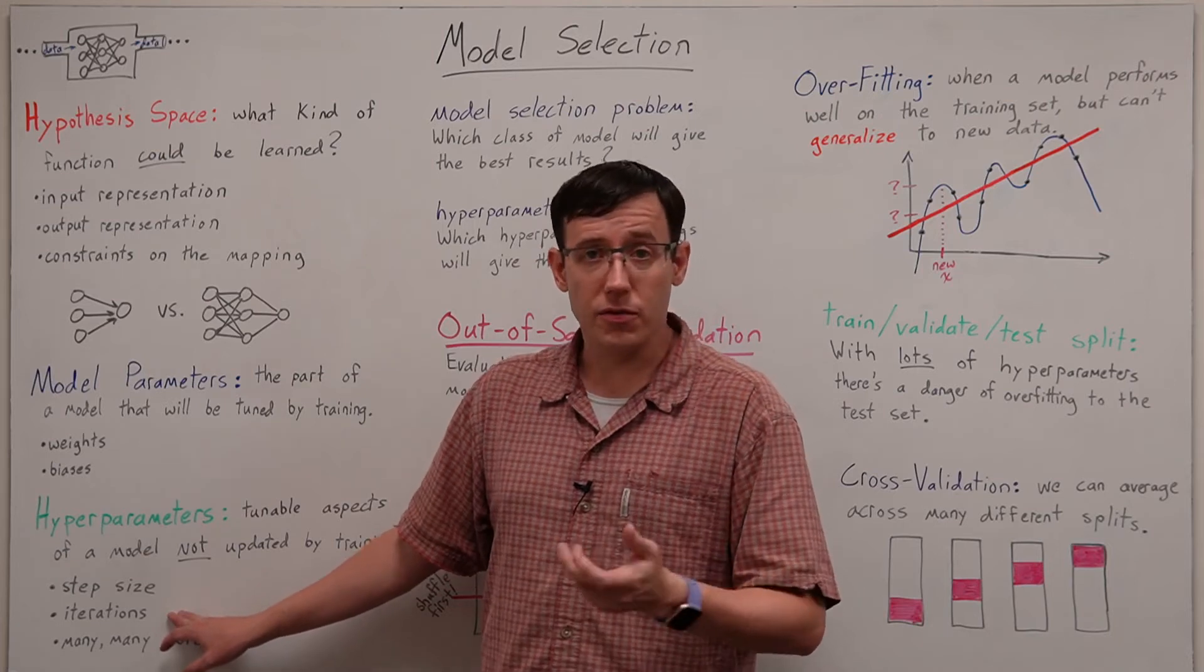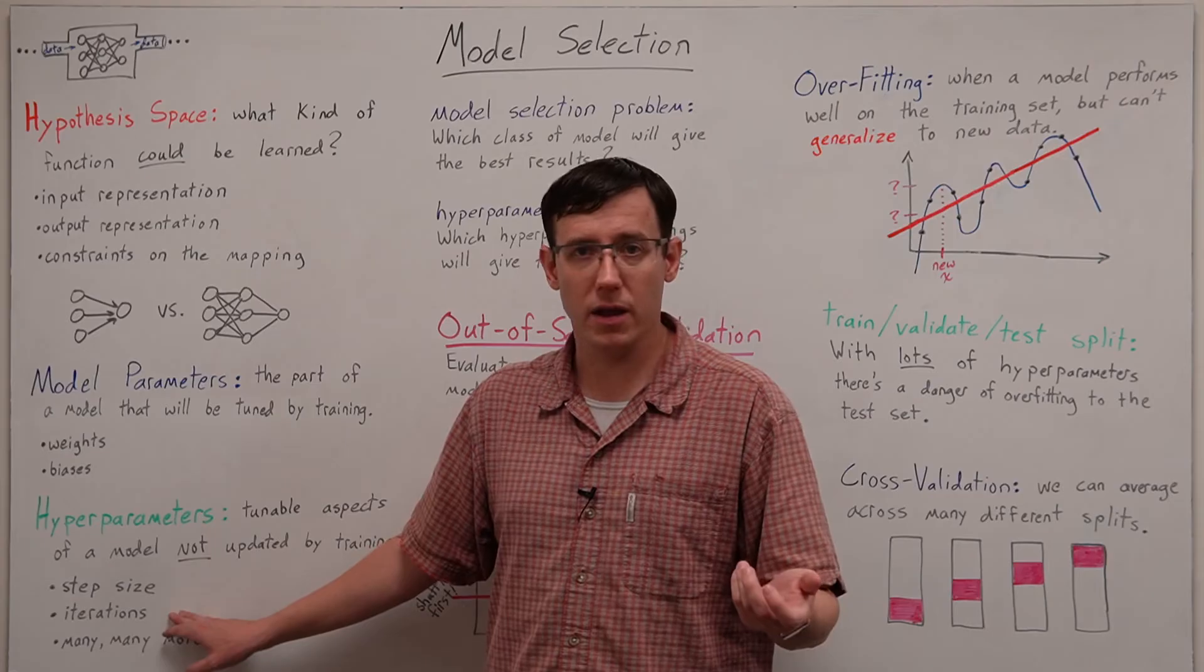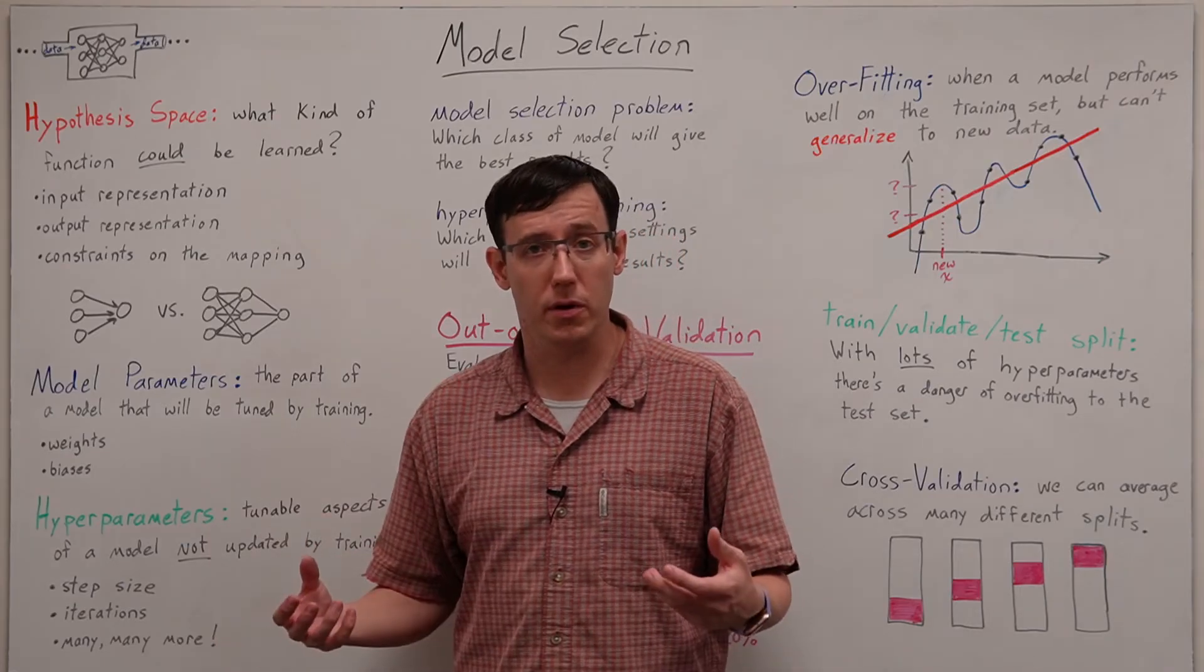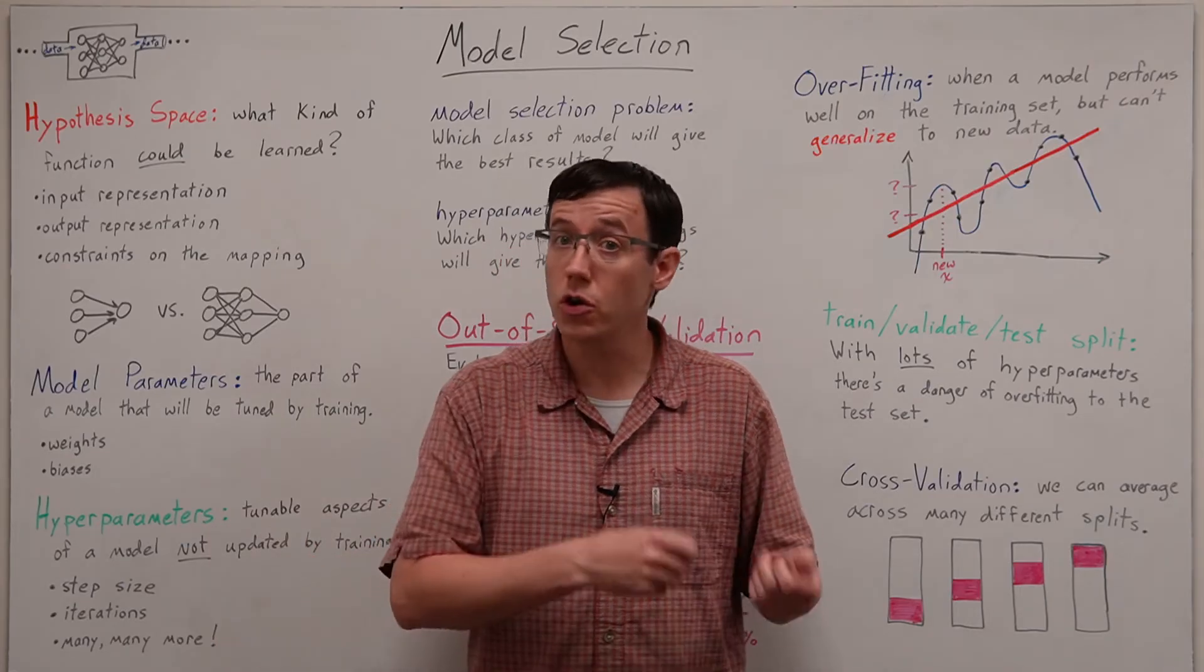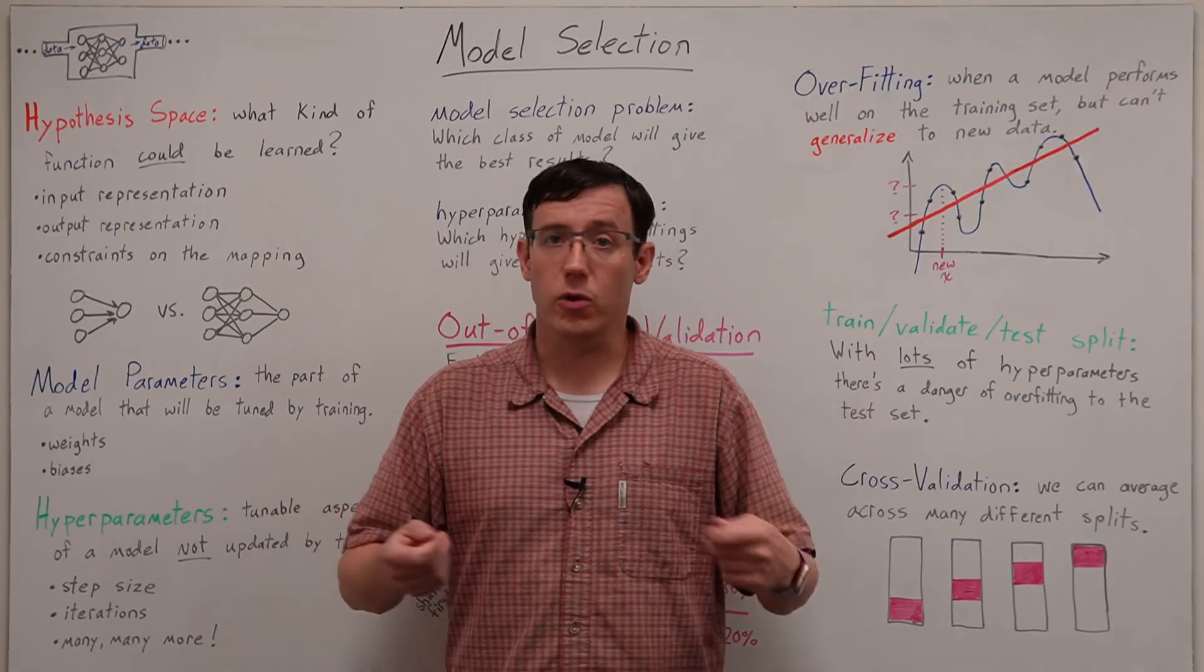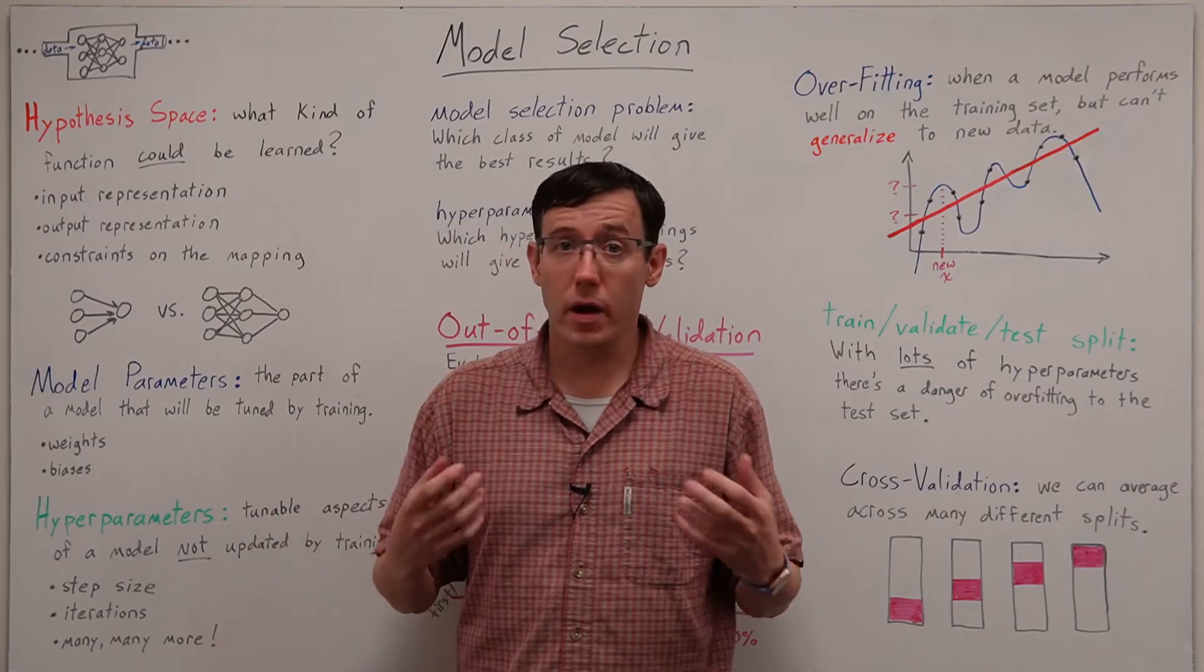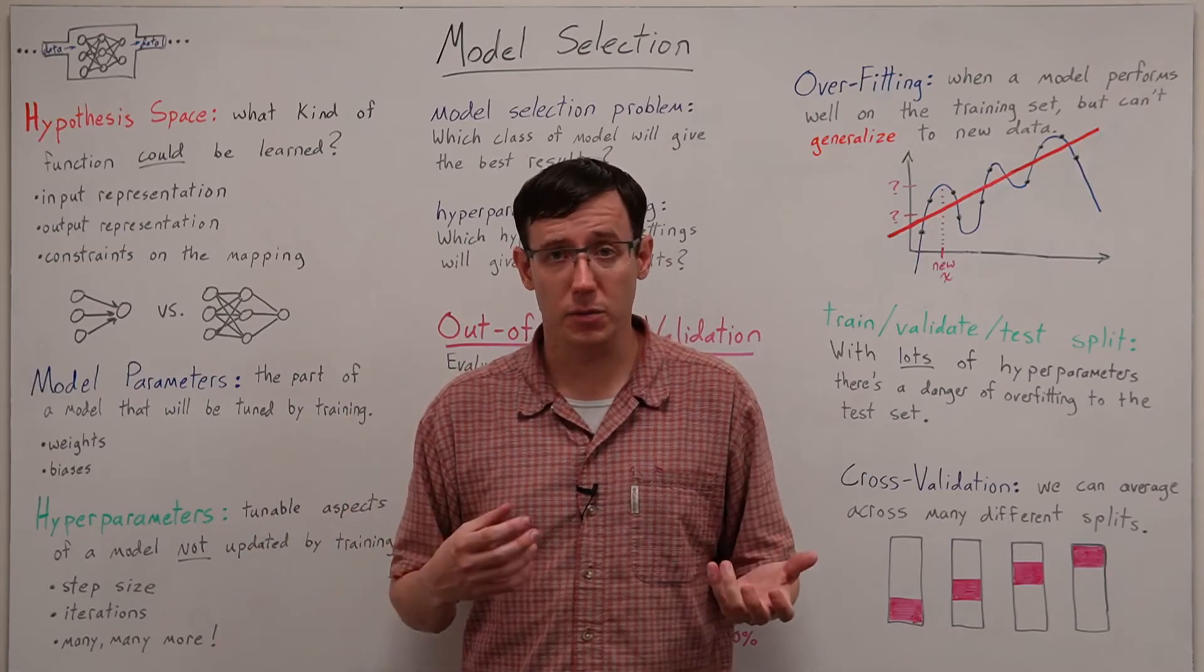And when we run gradient descent it generally takes many iterations to converge to a good model. But we can think of the number of iterations for which we will run gradient descent as another hyperparameter, something that we could tune but is not being directly decided by the training.